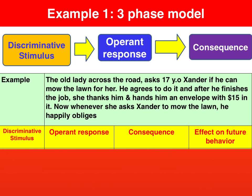What you need to be able to do is deal with a scenario like the one we have here, and identify the three elements in order of Skinner's three-phase model: the discriminative stimulus, which leads to the operant response, which leads to the consequence.